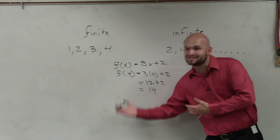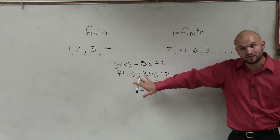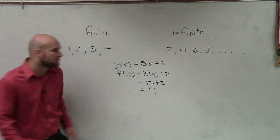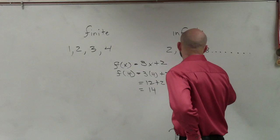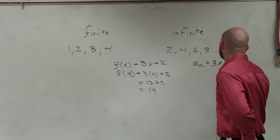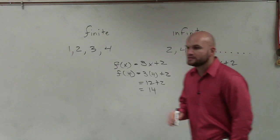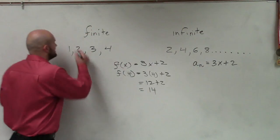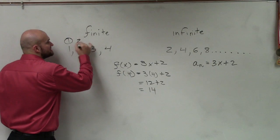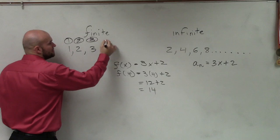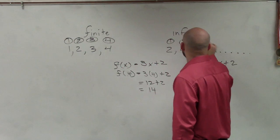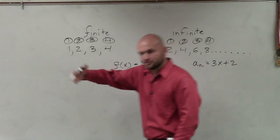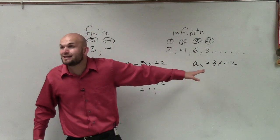All we're going to do is transition from function notation to sequence notation. When we use sequences, we don't use the function notation — we're going to use what we call subscript notation. So we could say a sub n equals 3n plus 2. When using this notation, you can label the terms of your sequence: this is the first term, this is the second term, third term, fourth term — and it can continue on and on forever.